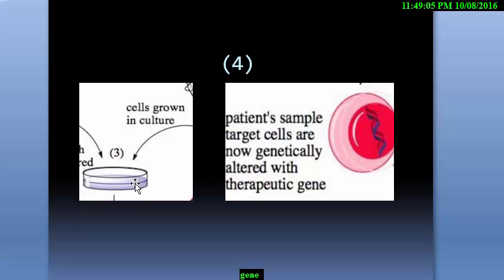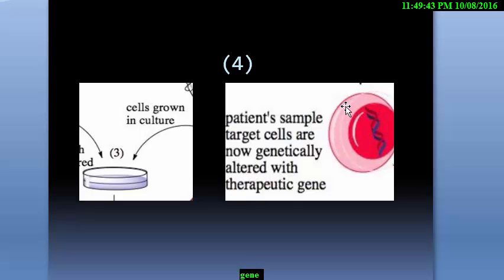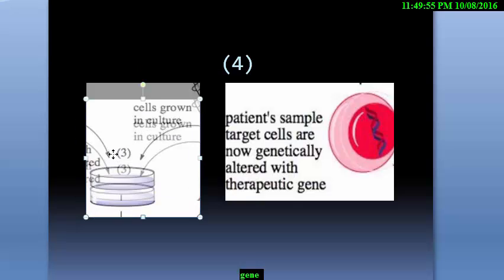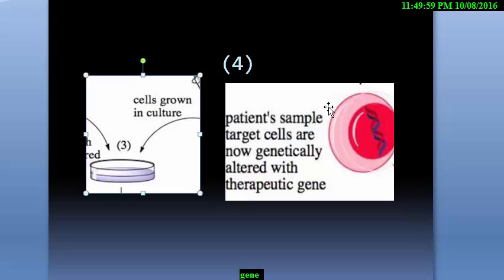This is where we will treat the gene. The arrow shows that the therapeutic gene — the perfect gene — will enter here. And this other arrow means that the disease-carrying gene cells from our body are entering from here. Now we will culture the cells. When the culture or gene treatment is completed, then the patient sample is now perfect — the patient's target cells are now genetically altered with the therapeutic gene. The disease gene is now altered with the therapeutic gene, so they are now totally perfect for our body and for our protein characteristics.